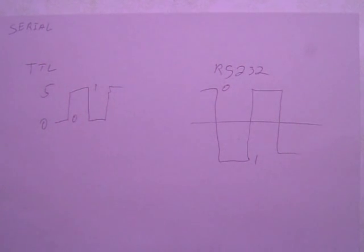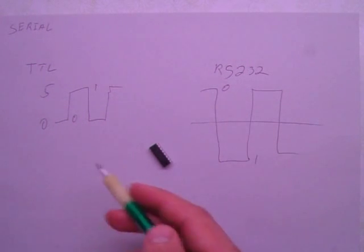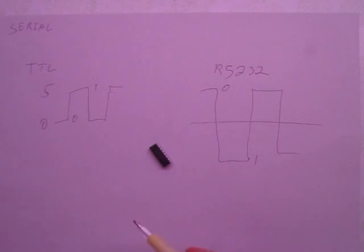So there are chips that we can use that translate from one system to another. Here is a chip from Texas Instruments, the MAX-232 line. And these basically can translate between TTL and RS-232. They make these for 5 volts, but obviously they have some for 3.3 as well.